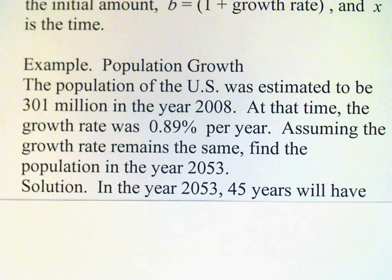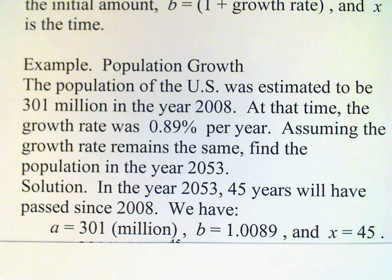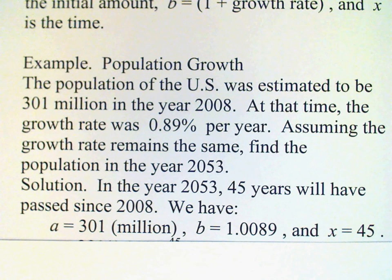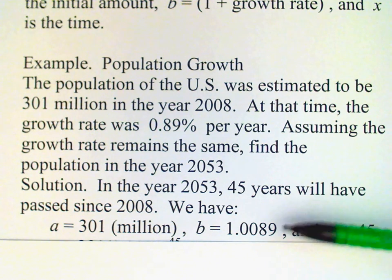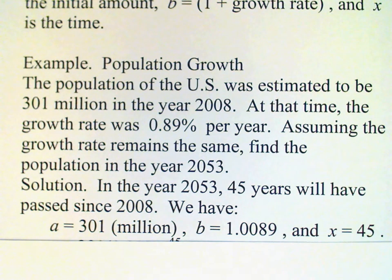Therefore we have a equals 301 million. You don't really need to include the million because we know we're working in millions. Then b is 1 plus 0.89% converted to a decimal, which gives us 0.0089, so b equals 1.0089. And then x will be 45, which is the number of years since our base year.